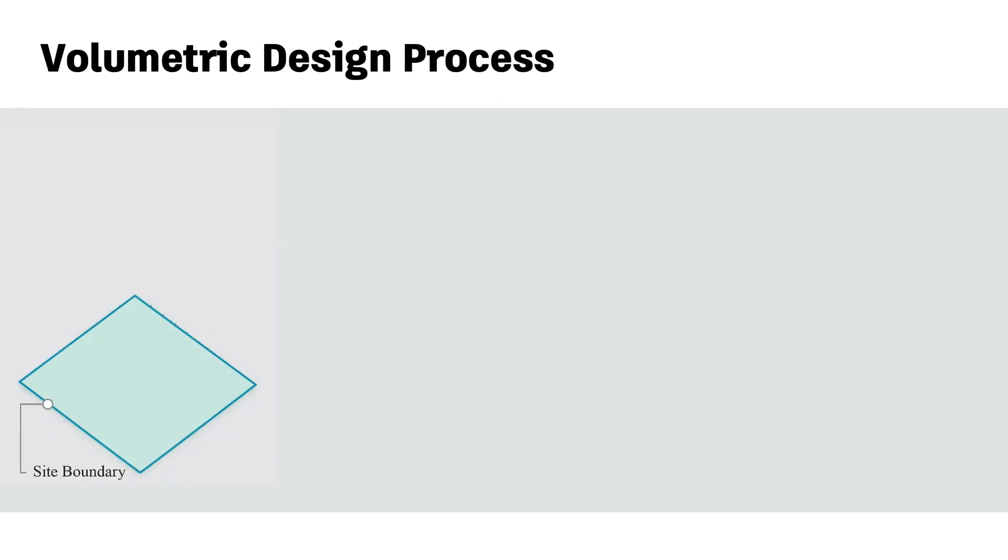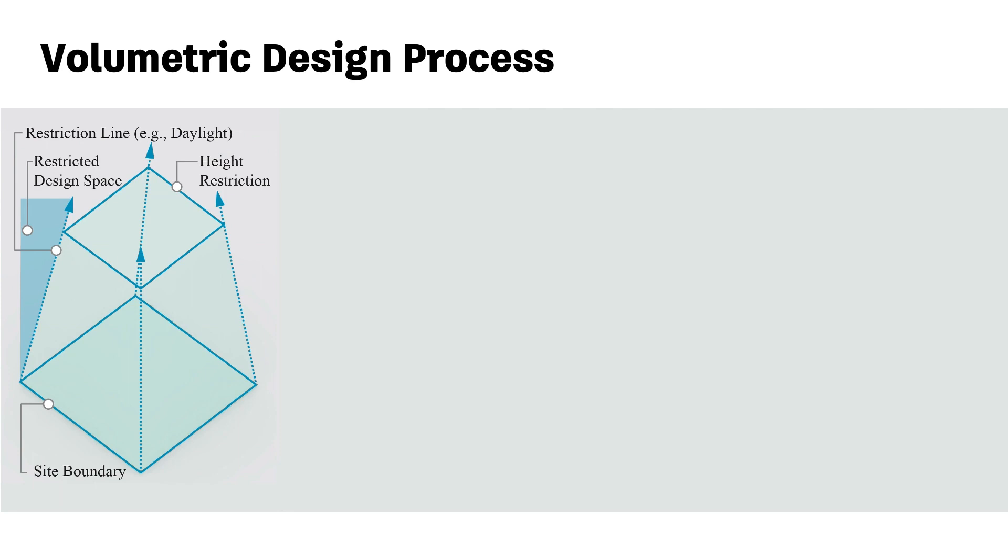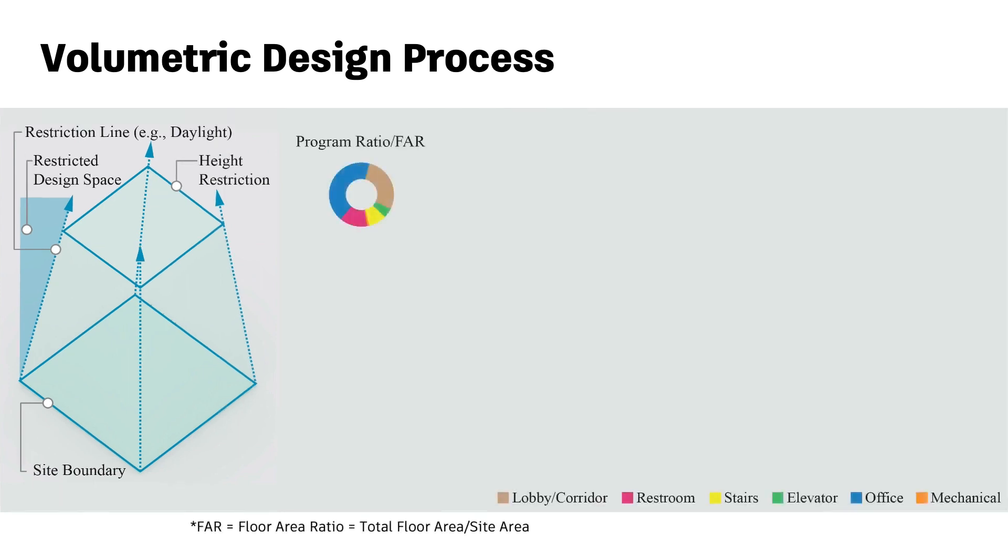The volumetric design process starts with the site, which is a piece of land provided by the client. Next, the architect will apply local building codes such as setback lines and height restrictions to form a 3D design space. Also, by considering the requirements, the architect will calculate the allowable total floor area and the ratio of each program type.